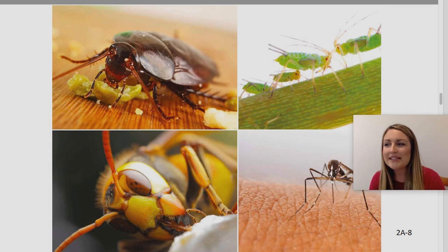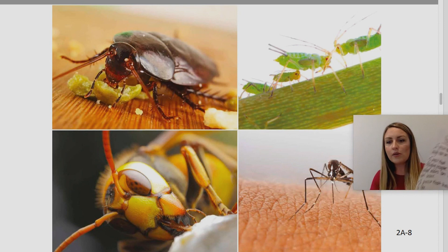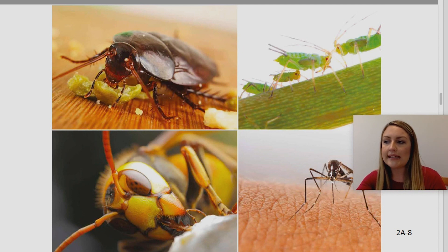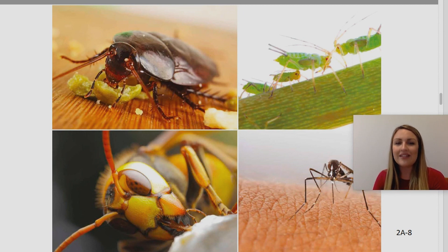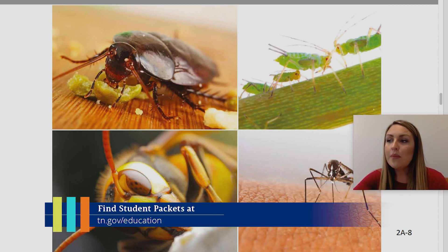Before we get started, to participate fully in our lesson today, you will need at least one piece of paper, a pen or a pencil, and if you made a list of predictions with me yesterday, go ahead and get that back out so we can look at those today. If you didn't get to see our previous lessons, you can find them on our website at www.tn.gov/education. You can still tune into today's lesson if you haven't seen any of our others, but it might be more fun if you first go back and watch our other lessons.